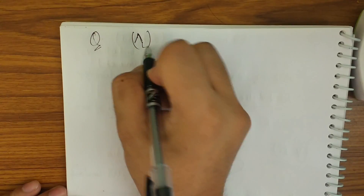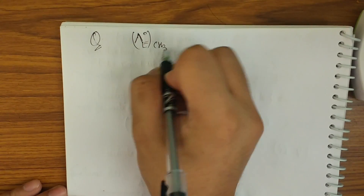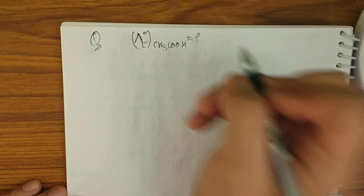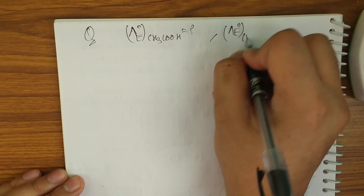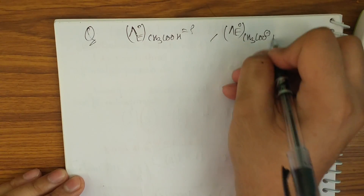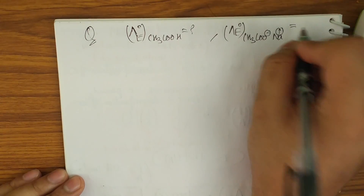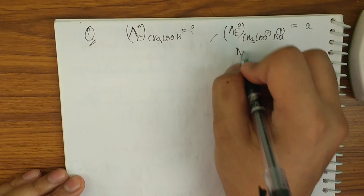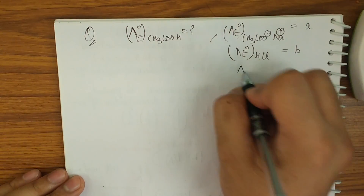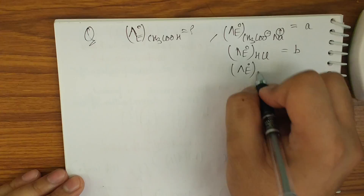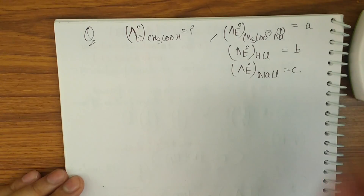Let me take simple examples to show how to solve questions. A basic question asks for λe of CH3COOH, given that: λe° of CH3COO⁻Na⁺ (its salt) = A, λe° of HCl = B, and λe° of NaCl = C.